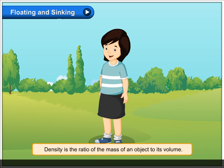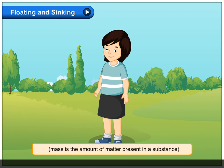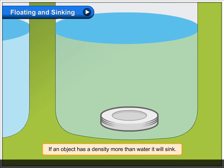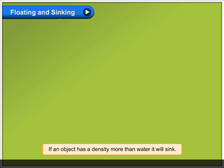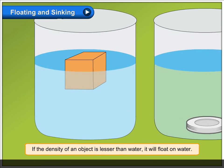Mass is the amount of matter present in a substance. If an object has a density more than water, it will sink. If the density of an object is lesser than water, it will float on water.